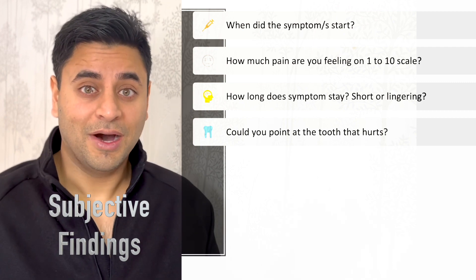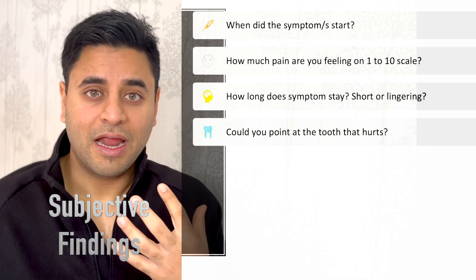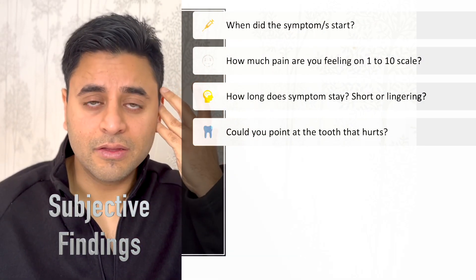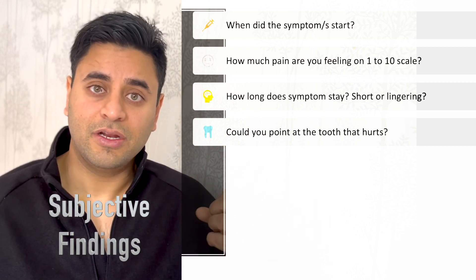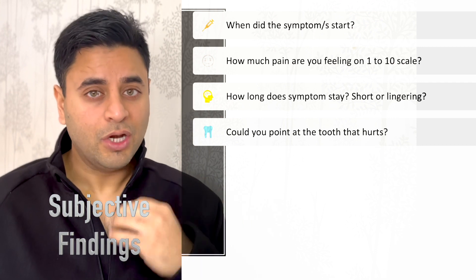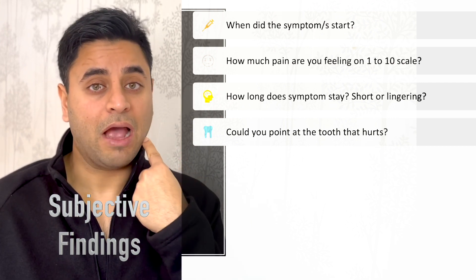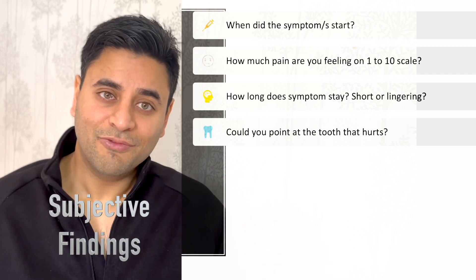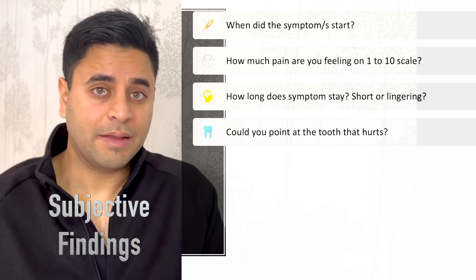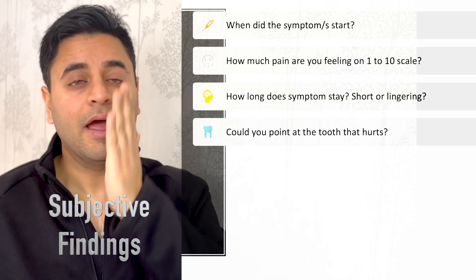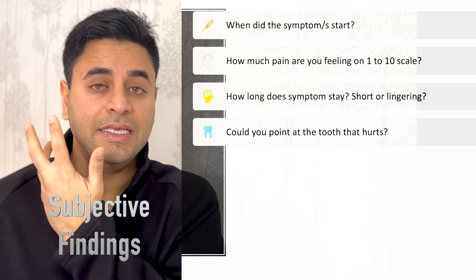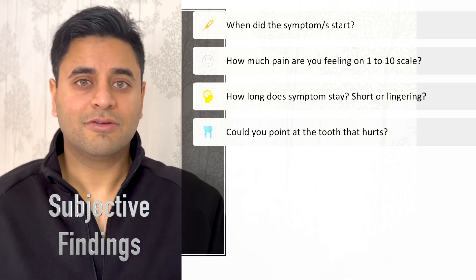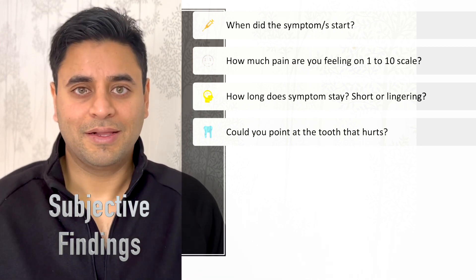The next important question is: can you point to the tooth that hurts? Remember, there is something called referred pain — a patient might point to a completely different part of the mouth, or even their ear or temple. We note where the patient believes the pain is, and then our diagnostic tests confirm whether that's actually the correct location. Sometimes the patient can't localize at all — it could be the entire left or right side — so then it becomes a matter of testing every tooth to find the real offending one.